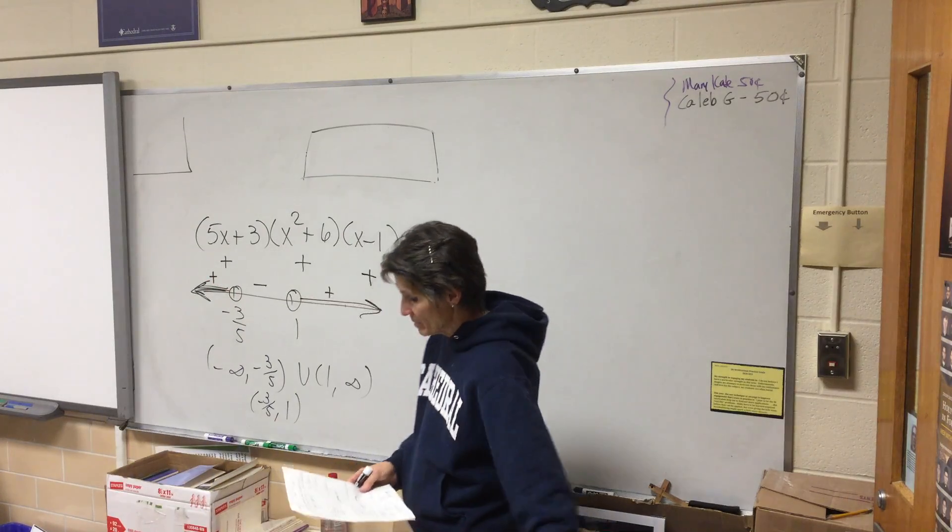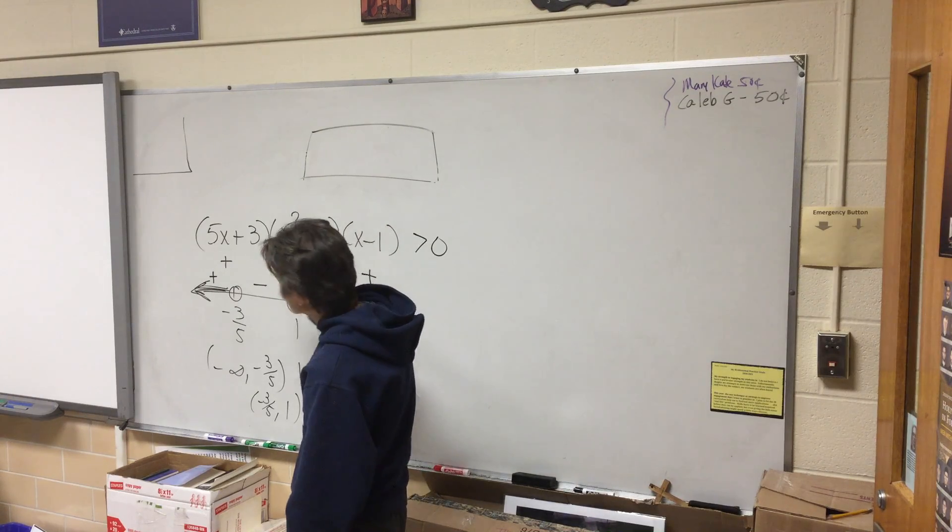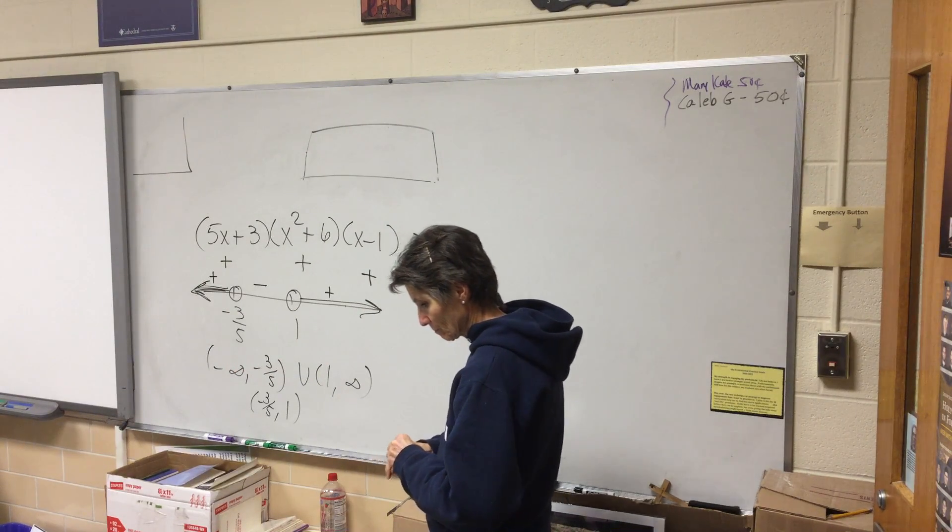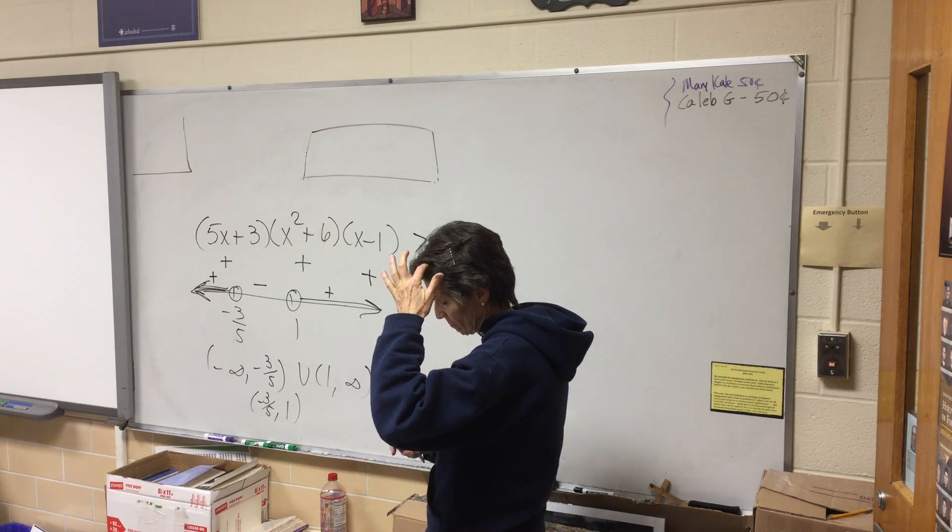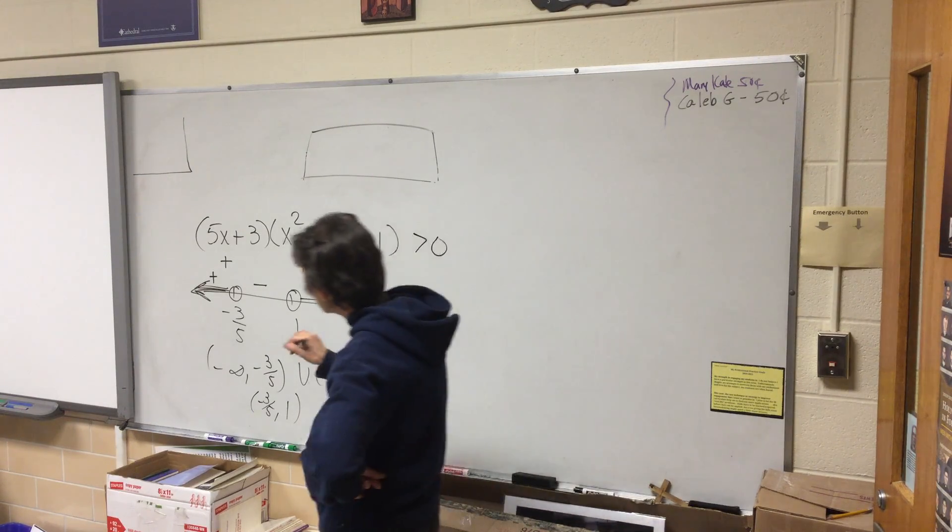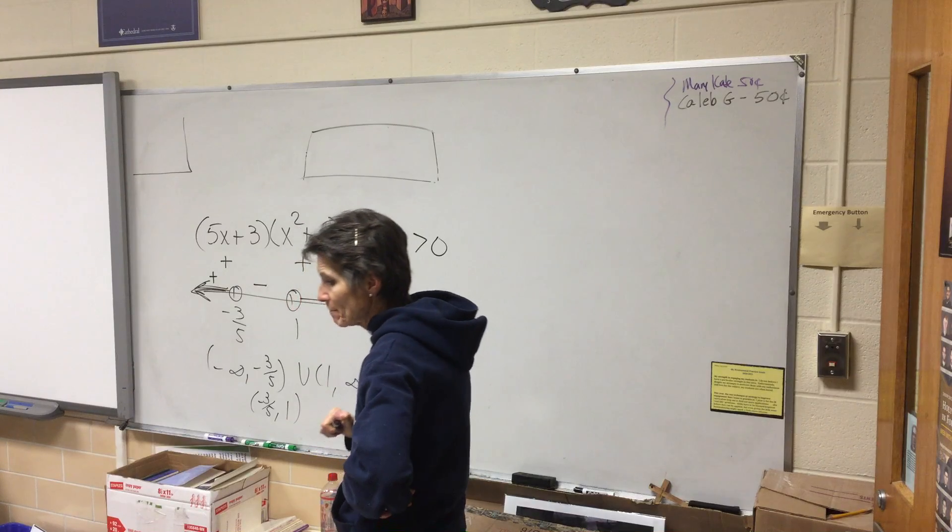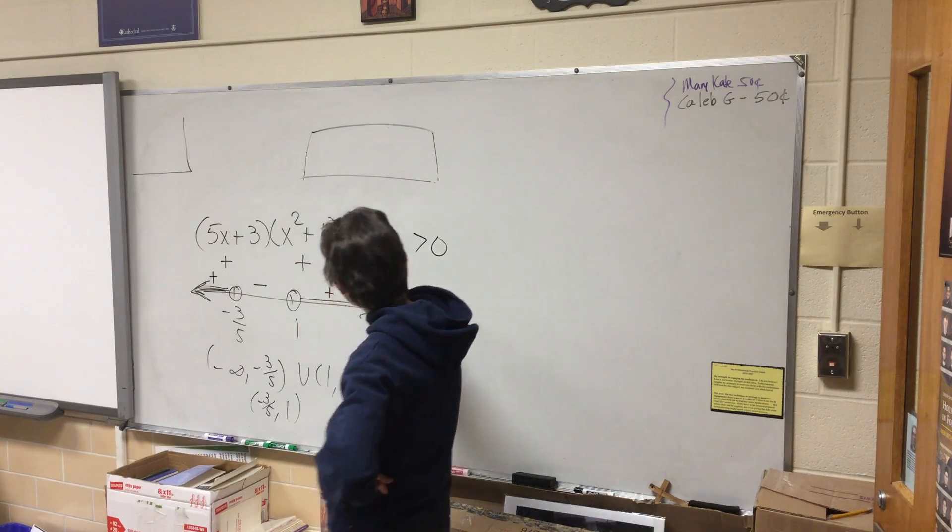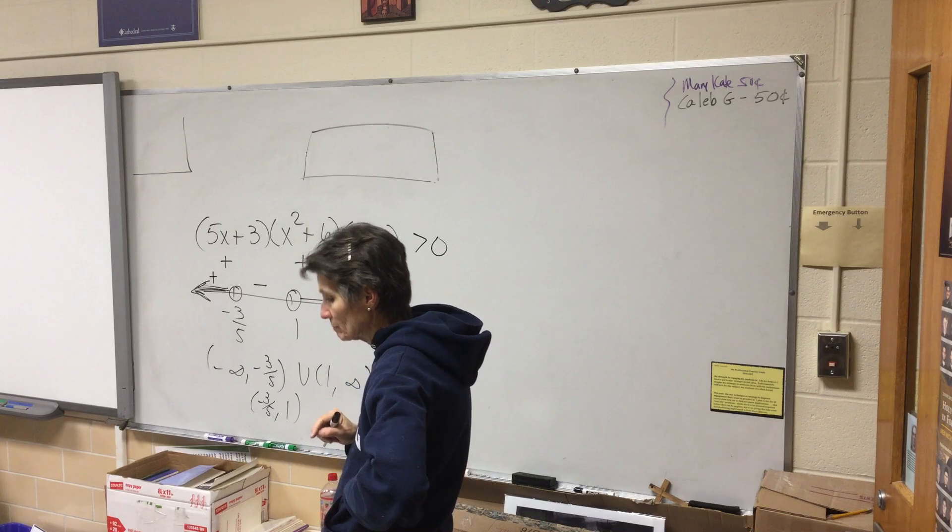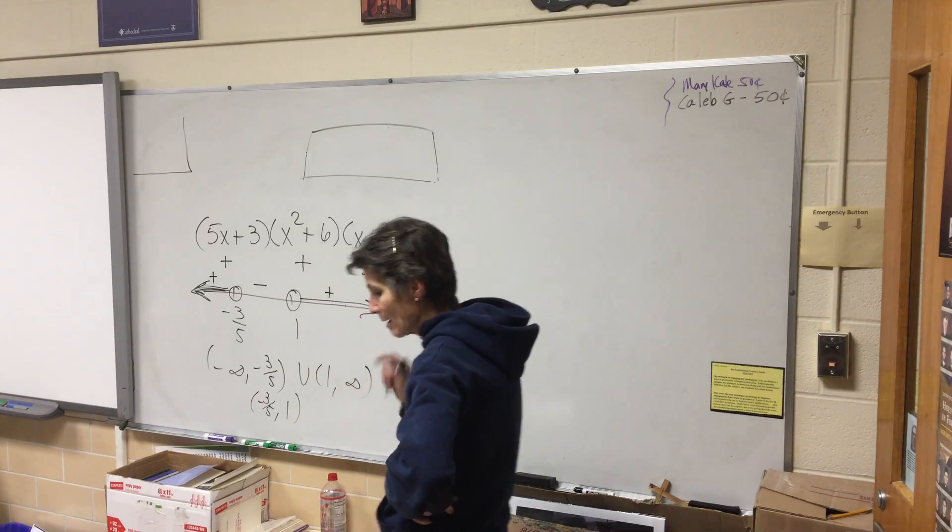So is there no zero? The zeros are negative three-fifths and one. Because if you put those numbers in, you literally get an answer that says zero. So when it says zero on the worksheet, you write x equals negative three-fifths, x equals one. It's not an interval. It's two dots.